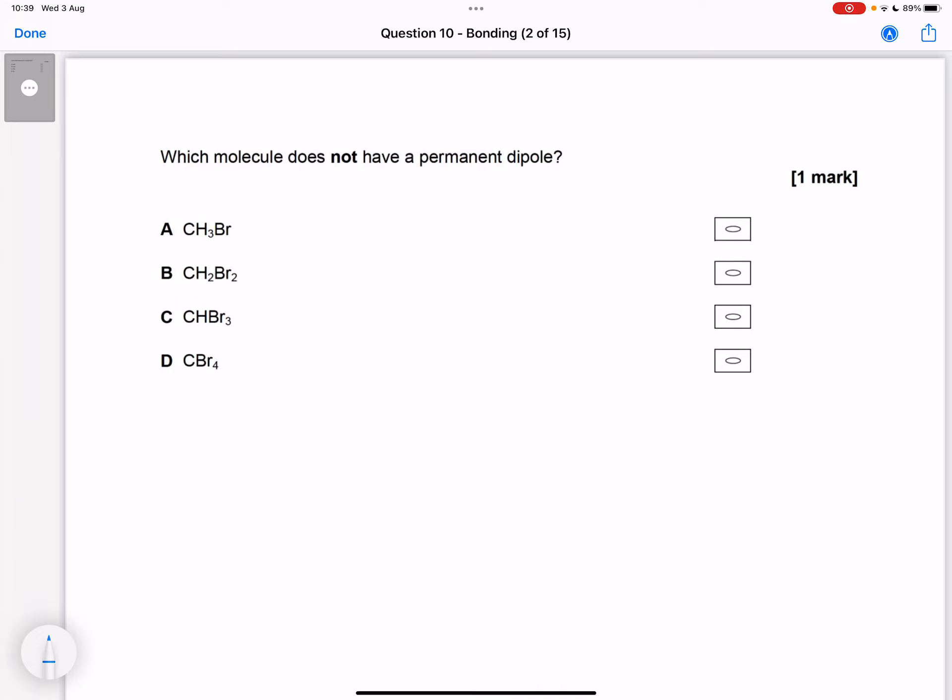What we need to do is look at the shape and symmetry. When we've got CH3 with 1Br, they've all got this tetrahedral shape.